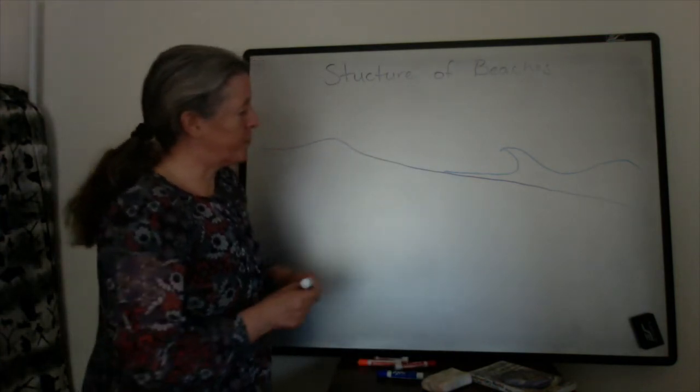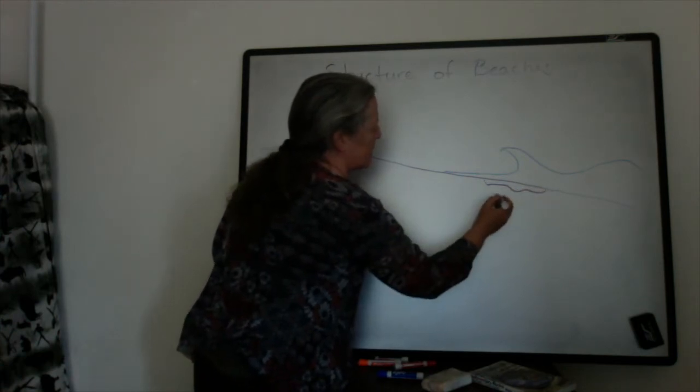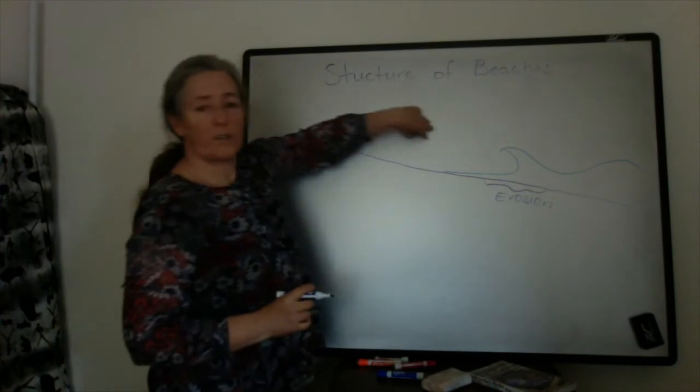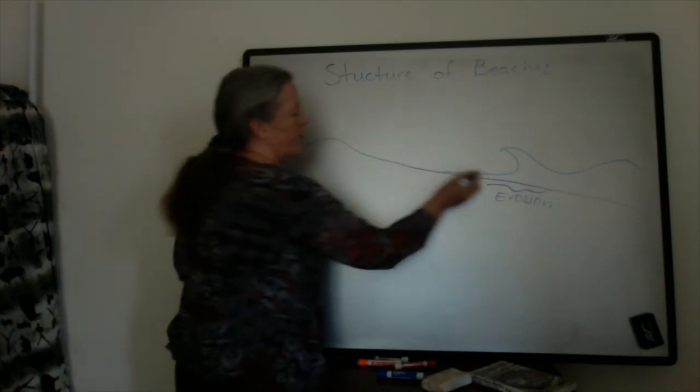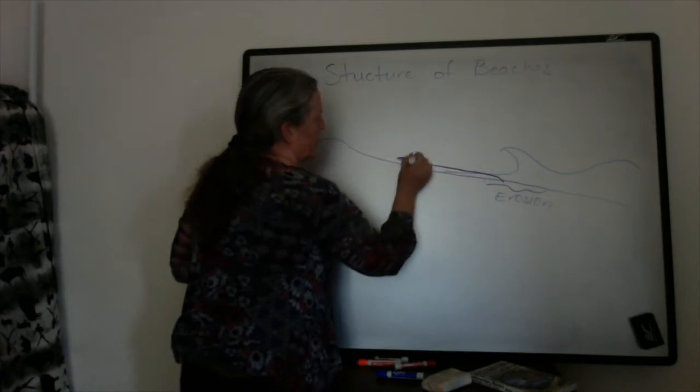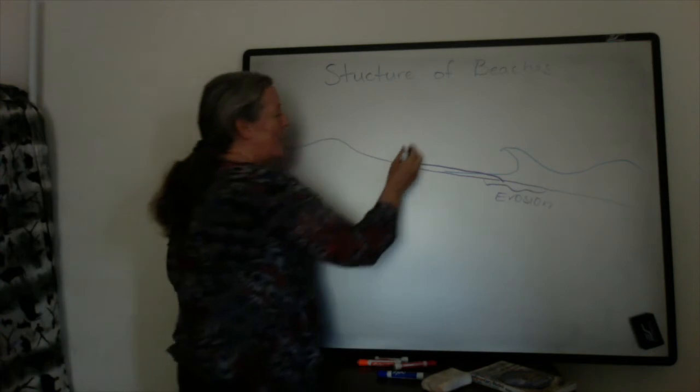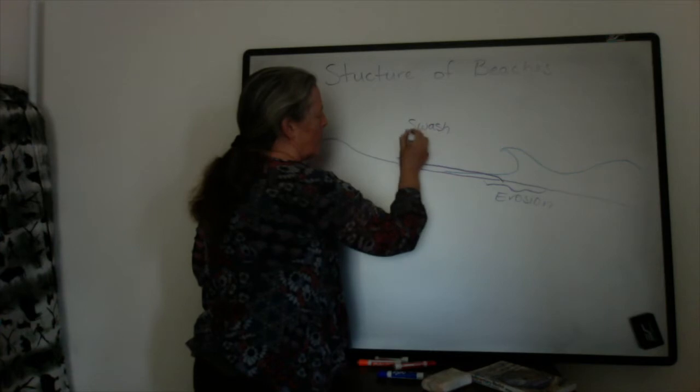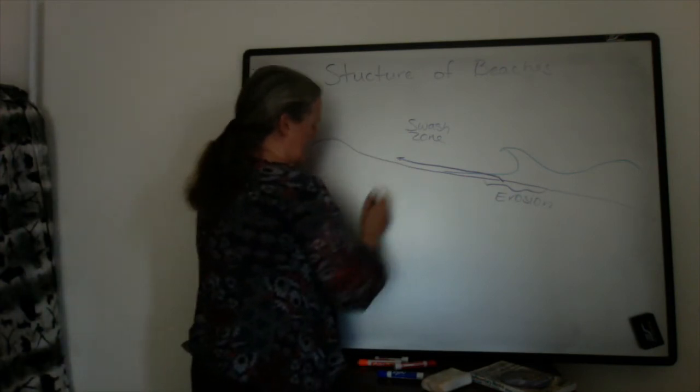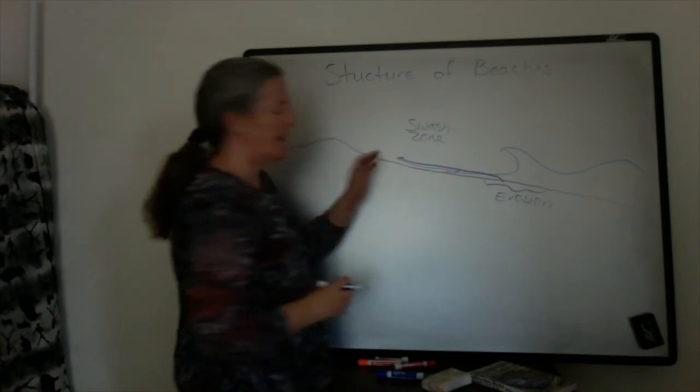When the waves break there's a lot of turbulence, and this zone is one where there is often erosion. There's a lot of force of the wave and the water flow moving on shore. The wave as it comes up is called the swash. The swash zone gets sediment transported onto it when the waves come up, and then the sediment gets eroded back or transported back offshore as those waves retreat.